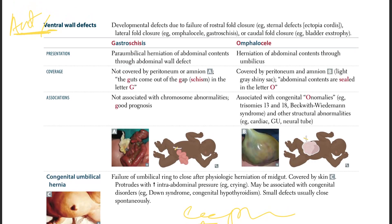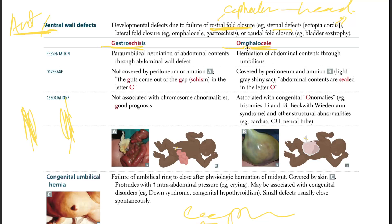Rostral fold defect — rostral means cephalic, meaning towards the head — gives you sternal defects like ectopia cordis, where the heart is outside the chest. Lateral fold defects give you gastroschisis and omphalocele. Caudal fold defects give you bladder exstrophy, where the bladder is outside the abdominal wall.